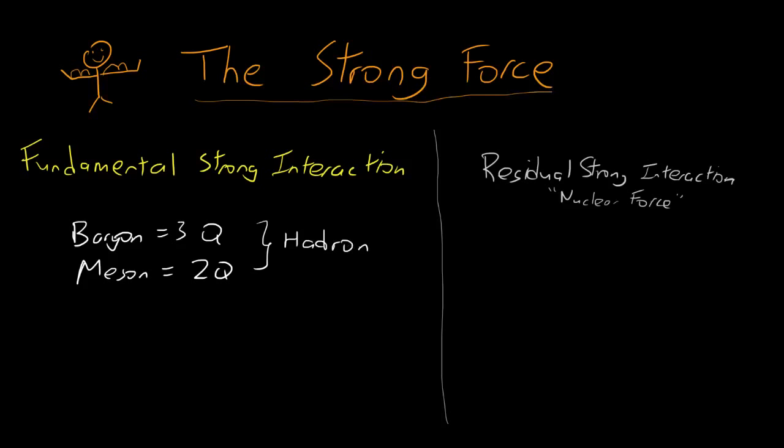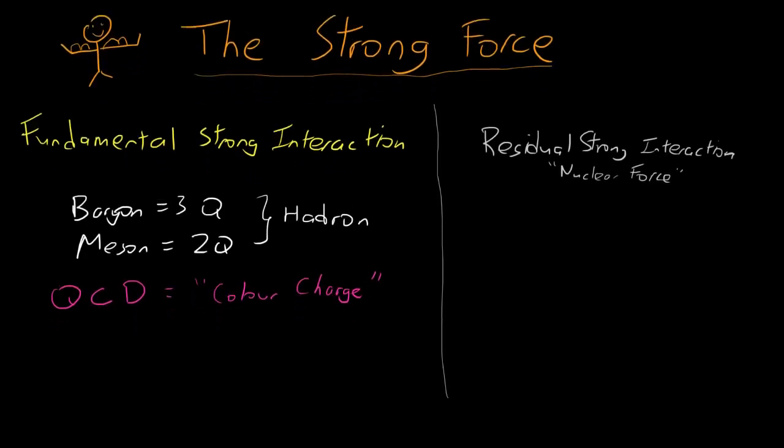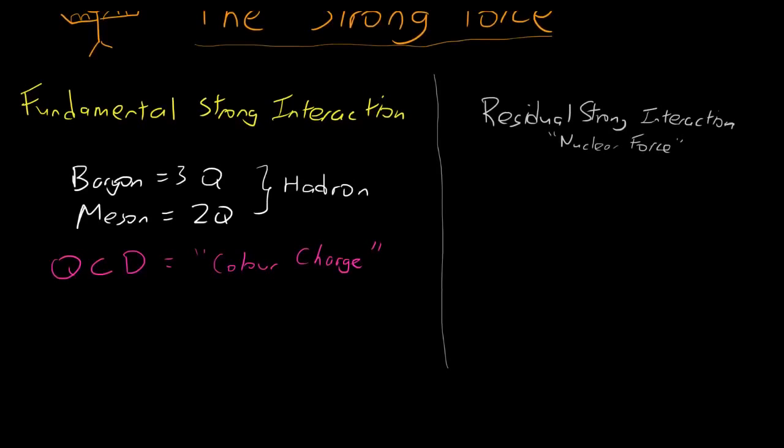So basically the fundamental strong interaction is governed by a theory known as quantum chromodynamics or QCD. And basically what this means is that all quarks have something called a color charge, just like how electrons have an electric charge. In quantum chromodynamics, all quarks have something called a color charge. Now this doesn't mean that they actually have colors, it's just a good way of representing how they interact.